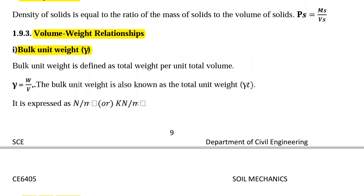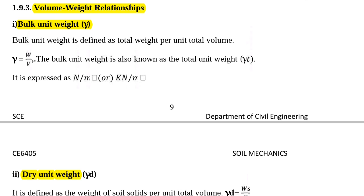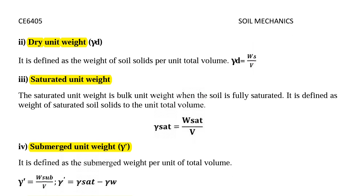Next we are going to see volume-weight relationships. First we will see bulk unit weight gamma. Bulk unit weight is defined as total weight per unit total volume: gamma equal to W divided by V. The bulk unit weight is also known as the total unit weight, gamma T, expressed in terms of Newton per meter cube. Next, dry unit weight gamma D is defined as the weight of soil solids per unit volume: gamma D equal to Ws divided by V.